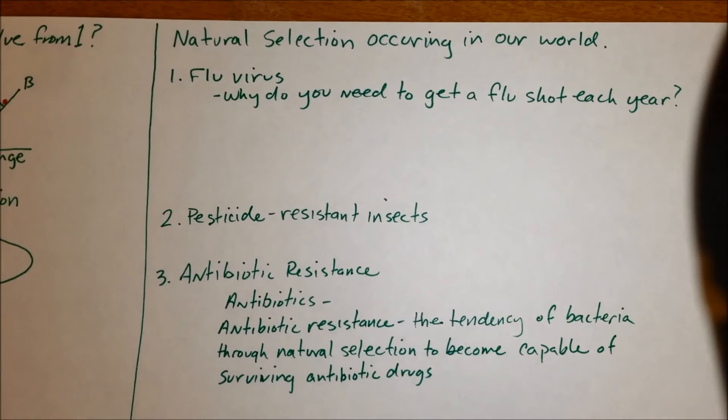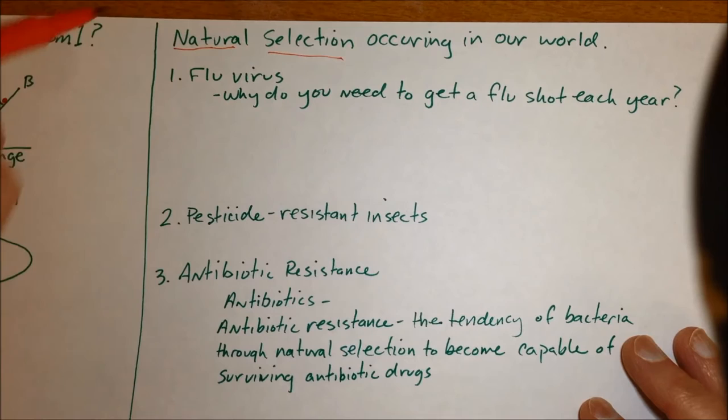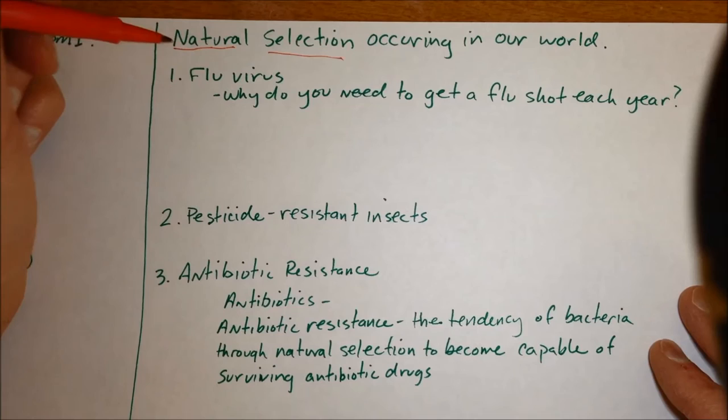So the other topic for study in evolution is this idea of since evolution of a new species takes too long to actually see one species change into another, scientists try to study examples that are going on today of how natural selection is influencing organisms to change and so we talked about three examples that are examples of natural selection occurring in our world.